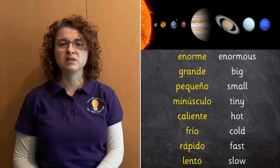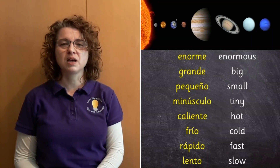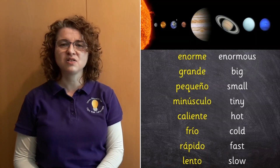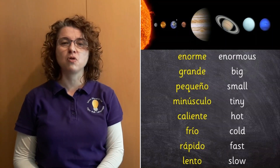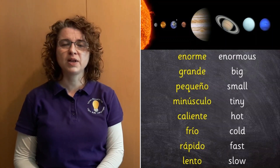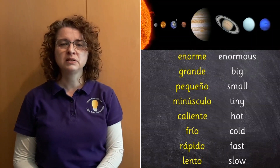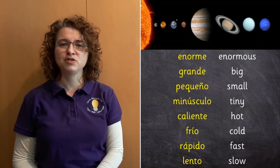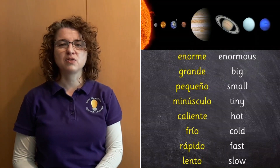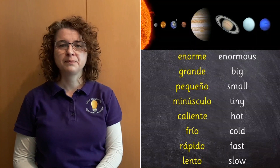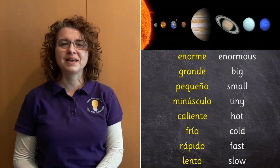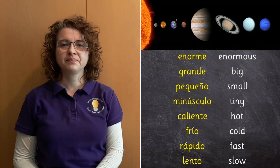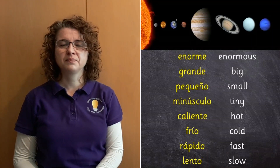The others are two pairs of opposites. We have the words for hot and cold, which are caliente and frío. And of course, we've seen frío before when talking about the weather. Then we have another pair of opposites: rápido and lento. Rápido is fast, like the word rapid. And lento is slow. Just have a go at saying those after me. Enorme. Grande. Pequeño. Minúsculo. Caliente. Frío. Rápido. Lento.